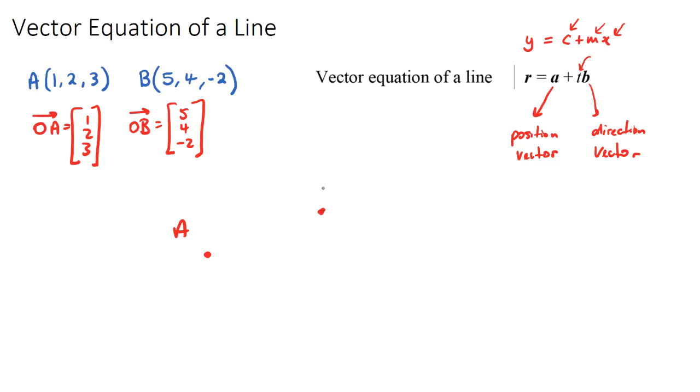A would be some coordinate here, B would be some coordinate here, and the direction would just be the vector A to B, and then multiplied by some length, some variable T, which means it can go this way or this way across the line.